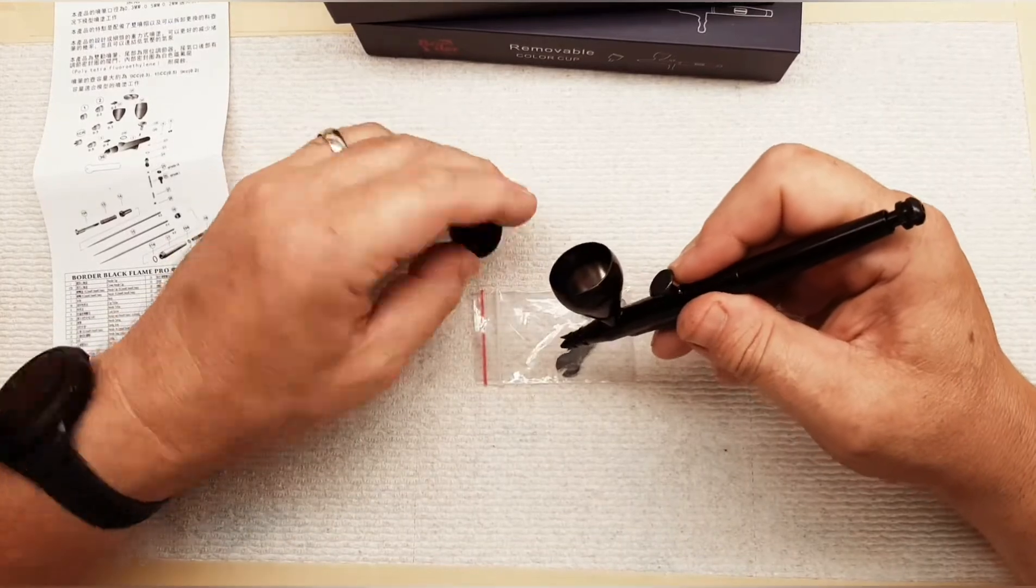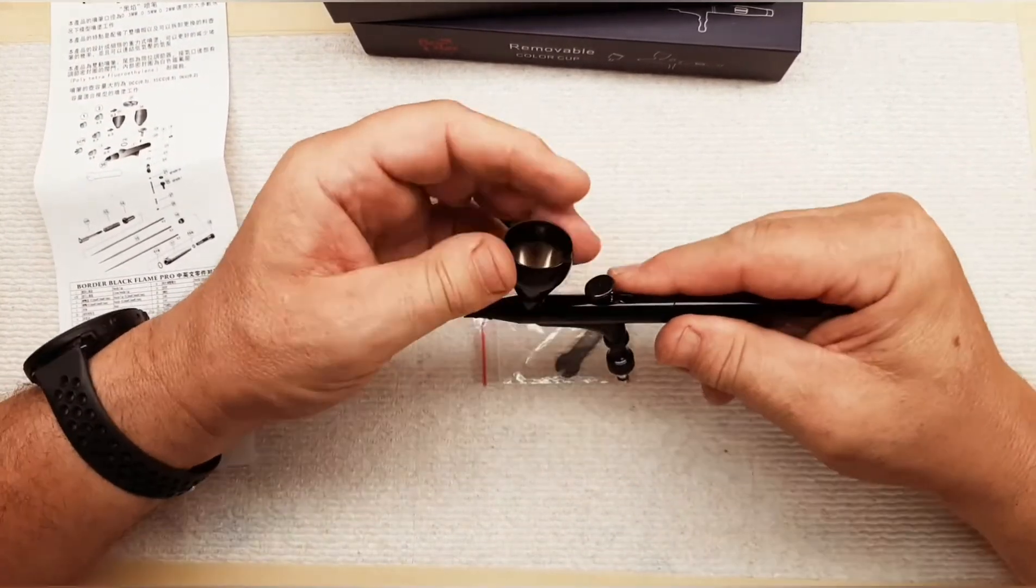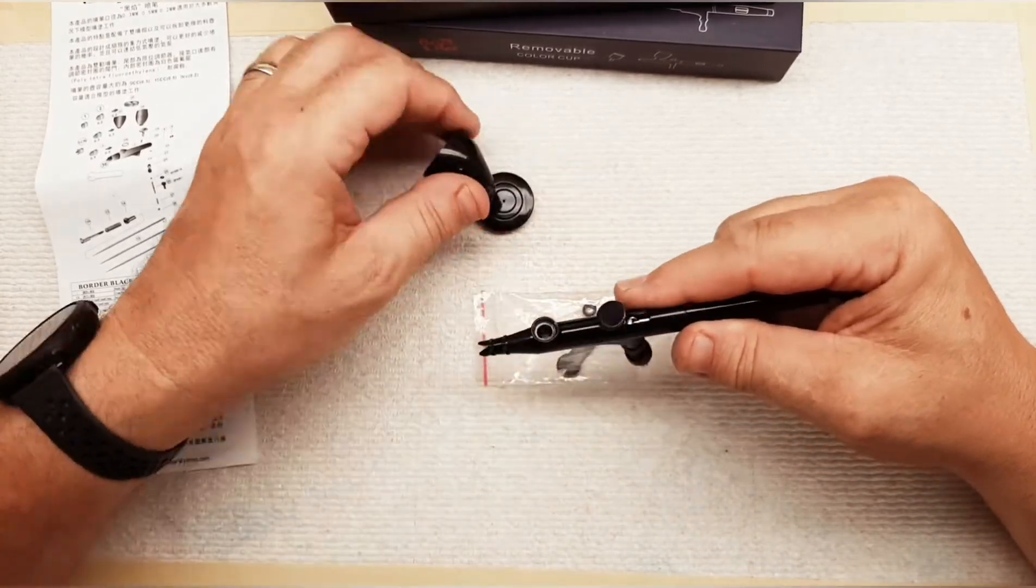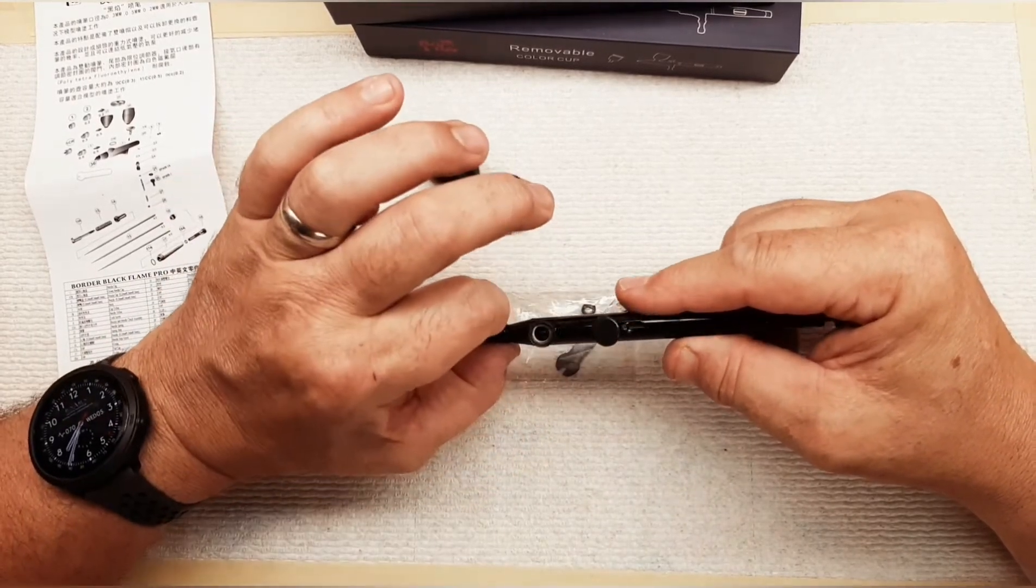You have your cap or cover. The thing I like about this airbrush is your cleaning aspect is a lot easier. This unscrews, you can get into the bowl area there. There's a large chamber, but with a Q-tip, it's easy to clean.